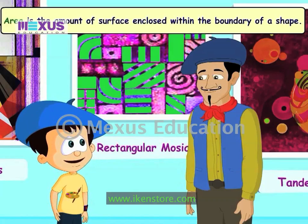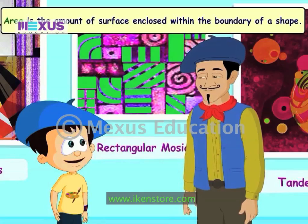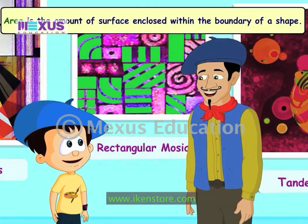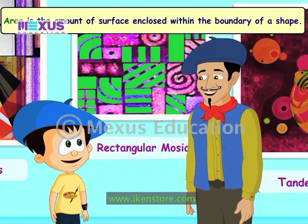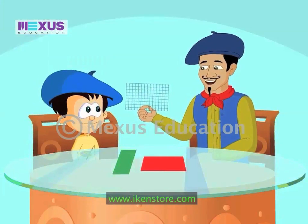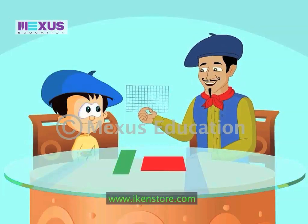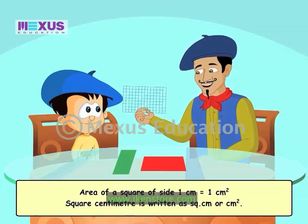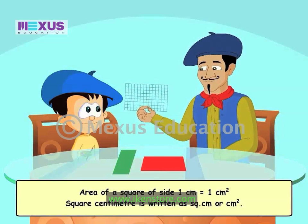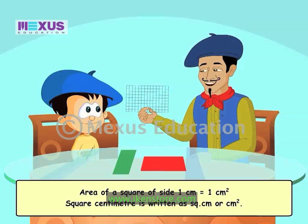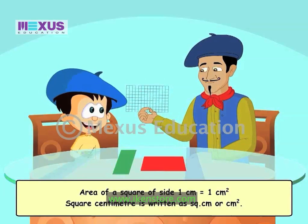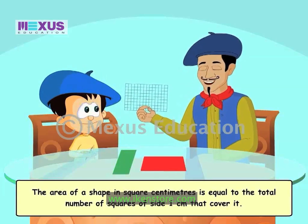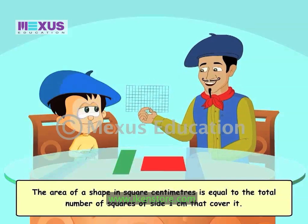How do we measure area? I know a simple method to calculate area. Please get me a graph sheet from that desk. This graph paper has small squares of size 1 cm drawn on it. The area of each of these squares is 1 cm². This will help us in finding the area of these two bigger shapes. If we know the total number of such squares which will cover each shape, we can find out the area of the shape.